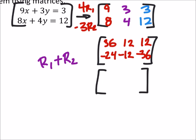Now, right now, I didn't do anything to that top row, even though we could. So I've got 36, 12, and 12. But when I take the row 1 and add it to row 2, so I've got 36 plus negative 24, which is 12. 12 plus negative 12 is 0. And 12 plus negative 36 is negative 24.